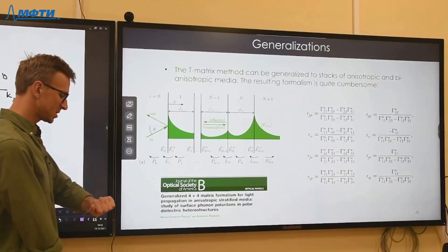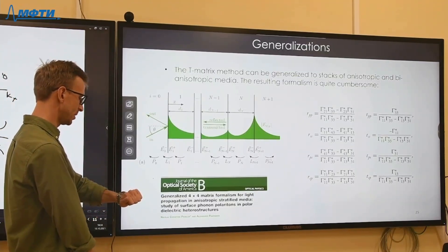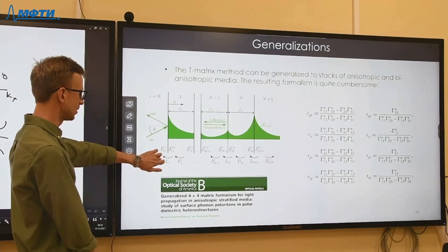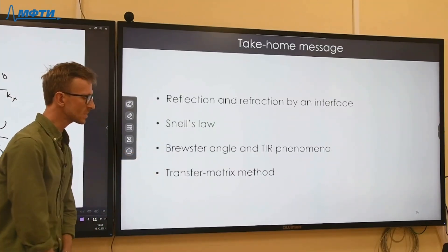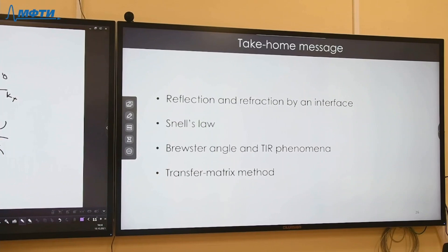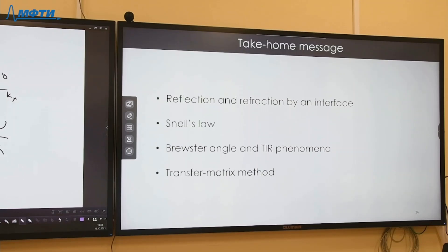That's it for today. We covered this quickly. The key things to remember from today's class are: reflection and refraction by an interface, Snell's law, the phenomena of Brewster angle and total internal reflection, and the transfer matrix method. Thank you for your attention and your time.